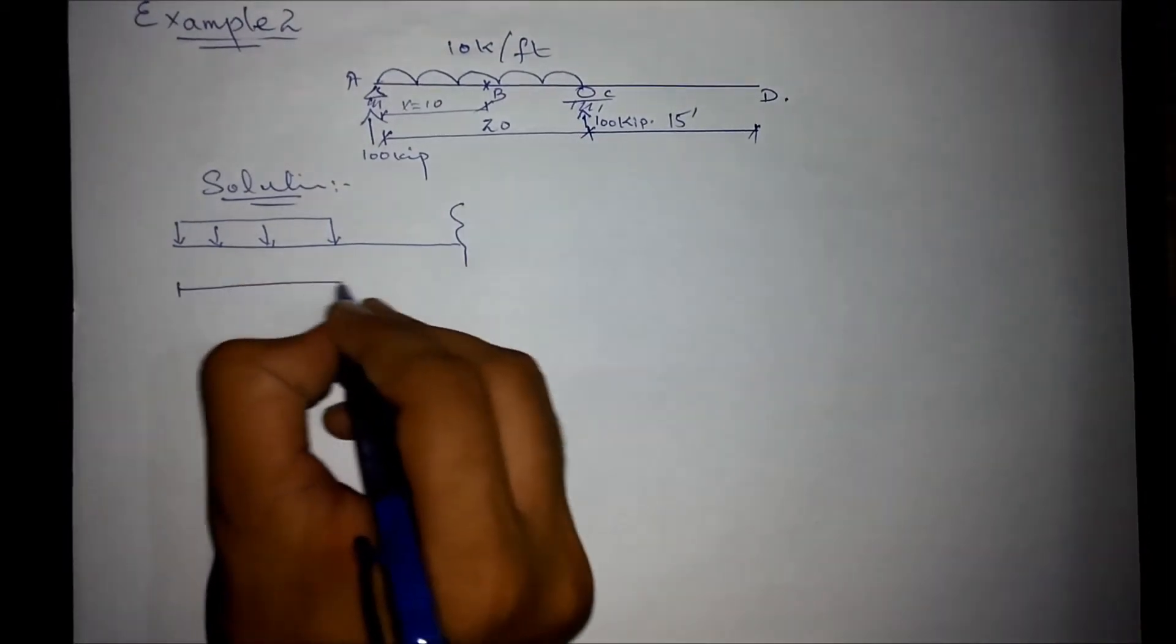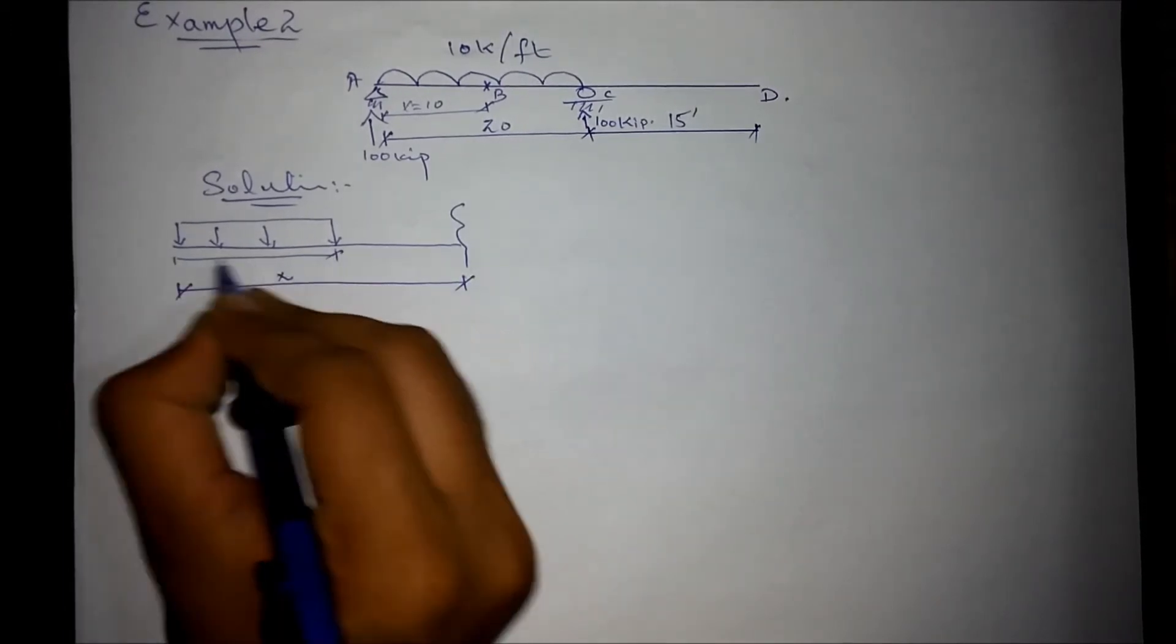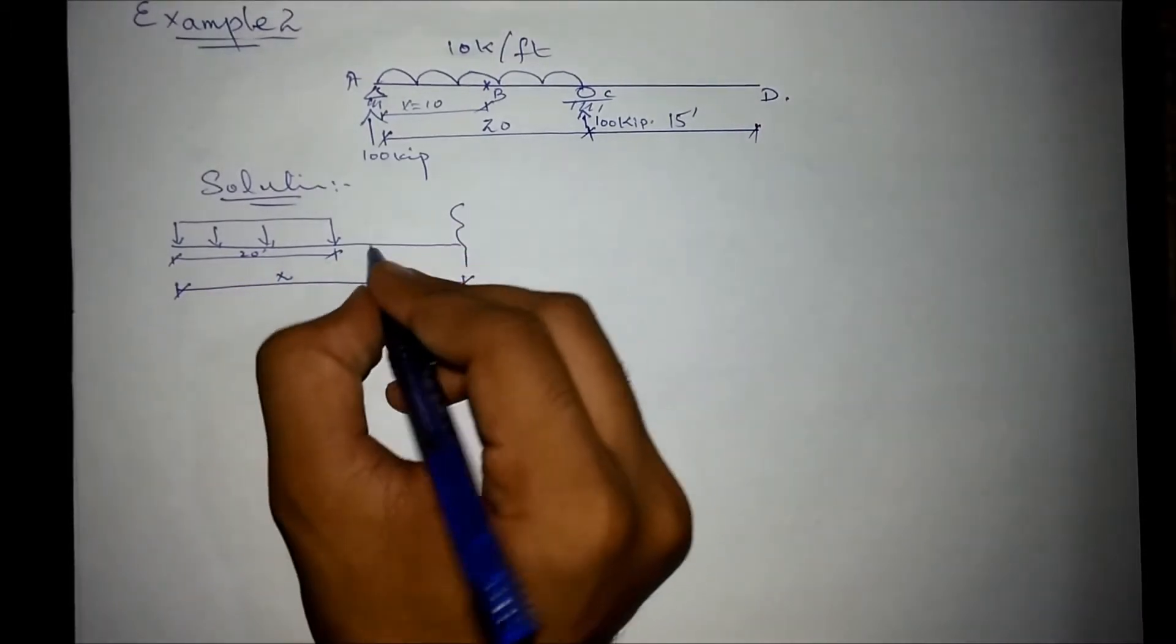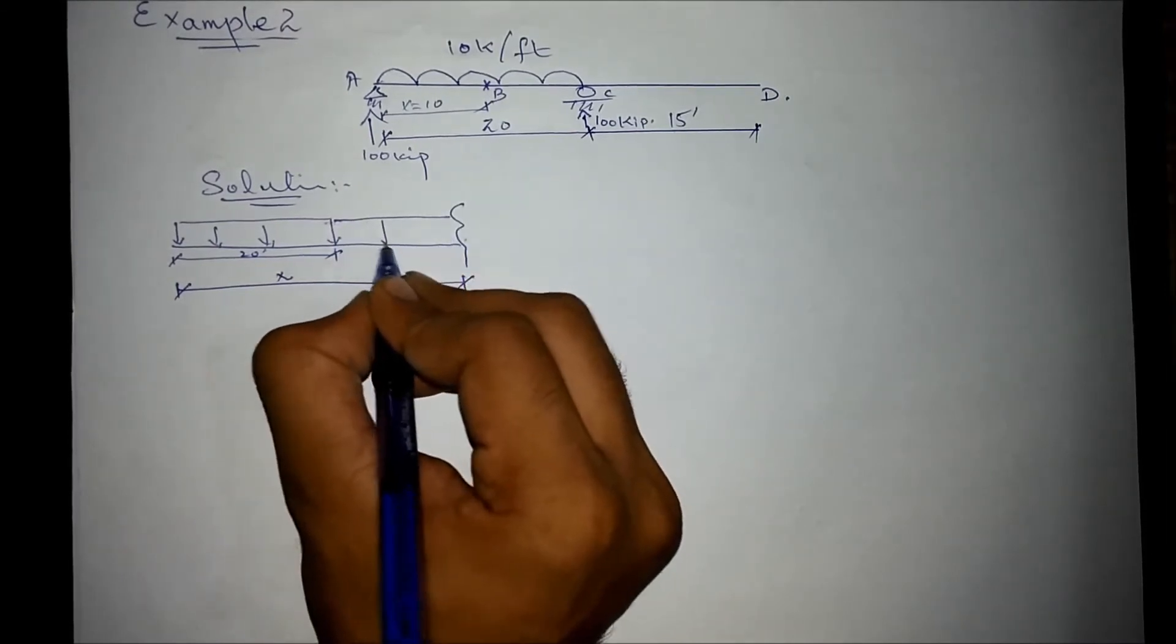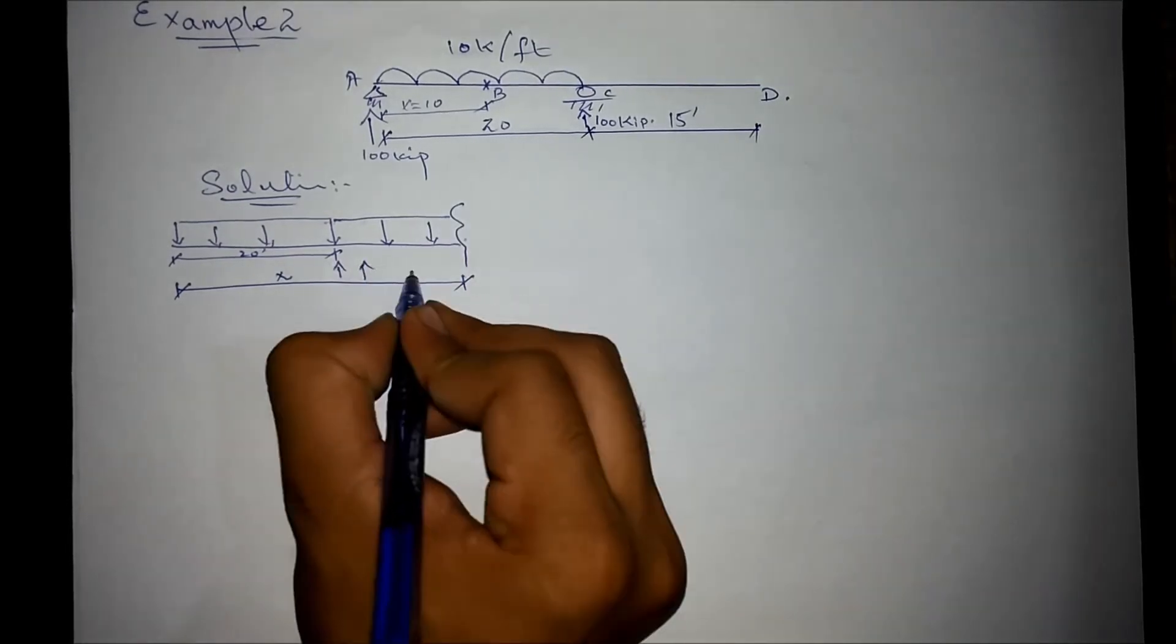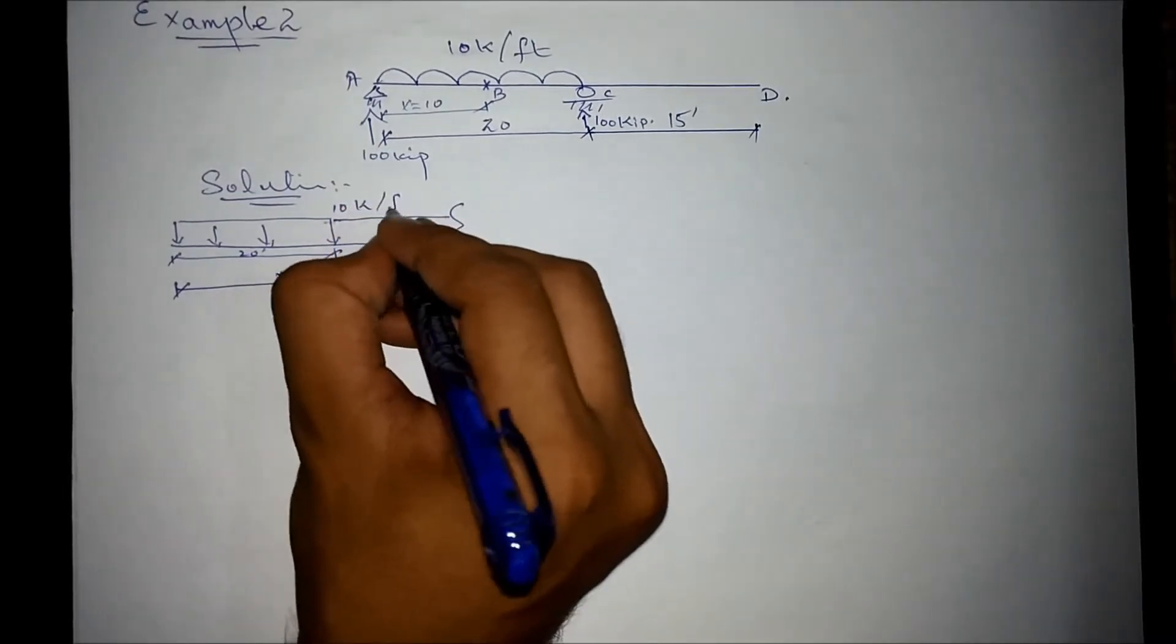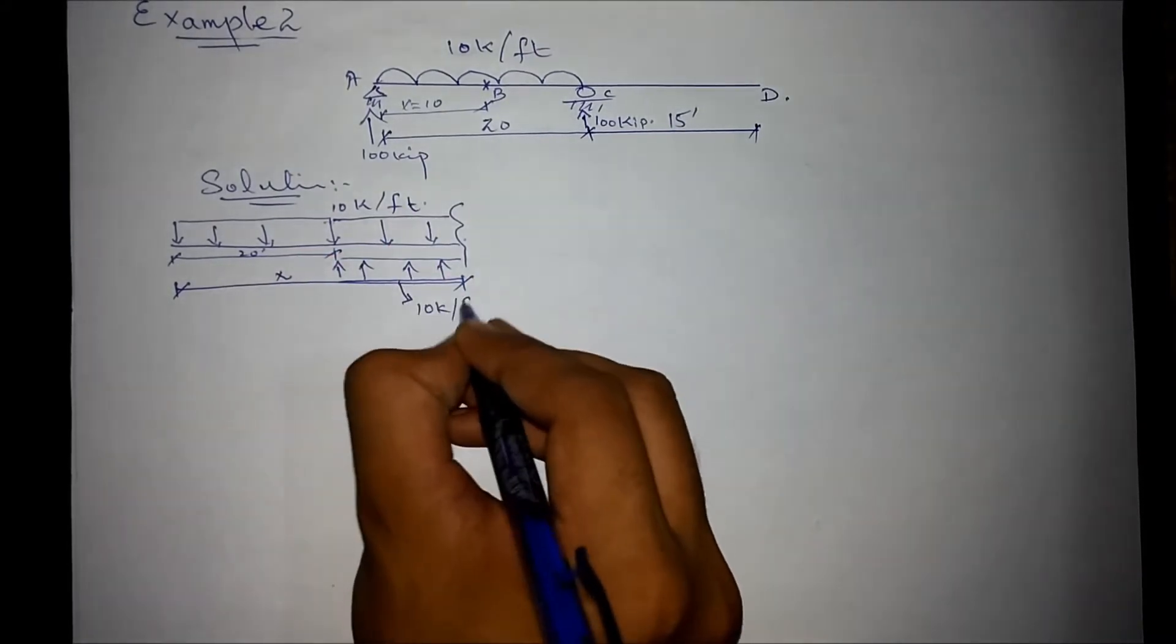Let's say this is distance x. This distance was 20 feet. Since the section is not cutting this UDL, we need to extend this UDL till the section and apply equal and opposite UDL to make sure that the beam remains in equilibrium. This is also 10 kip per feet.